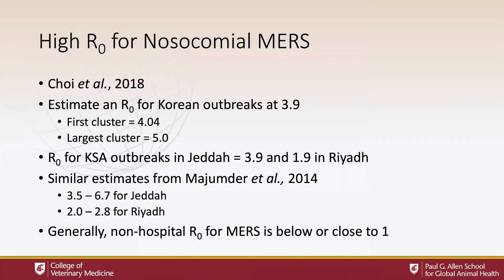For nosocomial transmission of MERS, there's a very high reproductive number across all settings examined. A recent analysis estimated that the R0 for the Korean outbreaks was 3.9 in the first cluster, 4.04 at St. Mary's Hospital, and closer to 5 in the largest cluster. The same study estimated the R0 in Jeddah, Saudi Arabia at 3.9 and in Riyadh at 1.9. This is very similar to our 2014 analysis, which found an estimated reproductive number of 3.5 to 6.7 for Jeddah and 2 to 2.8 for Riyadh. This contrasts with a non-hospital R0 for MERS that is either below or close to 1.